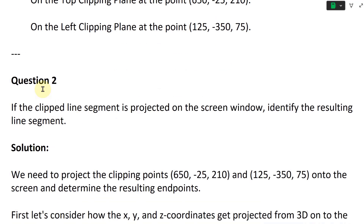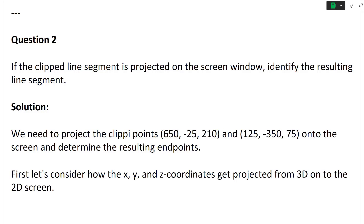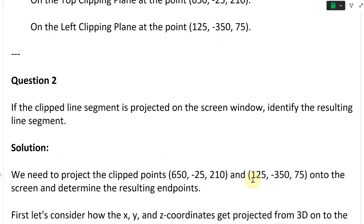Let's take a look at question two. This one asks: if the clipped line segment is projected on the screen window, identify the resulting line segment. We need to project the clipped points — clipped point 650, negative 25, 210 (the top one), and then 125, negative 350, 75 (the left point) — and determine the resulting endpoints on the screen.